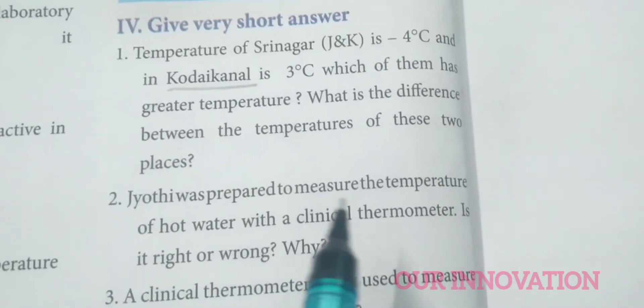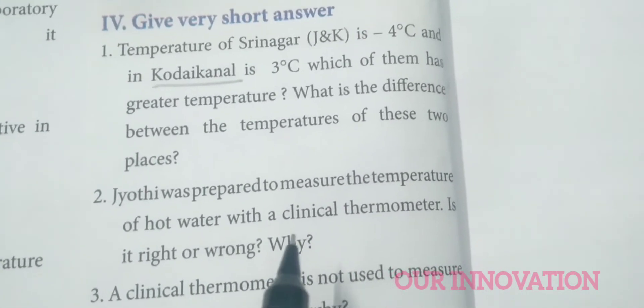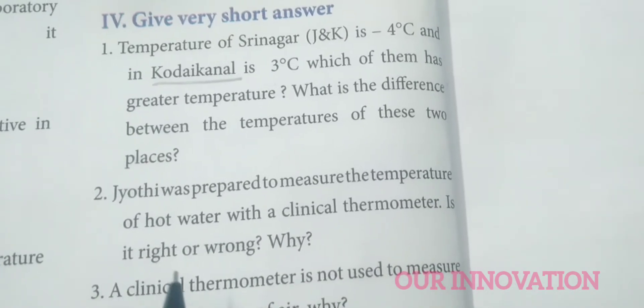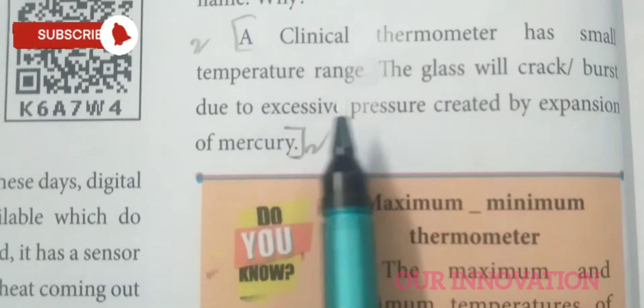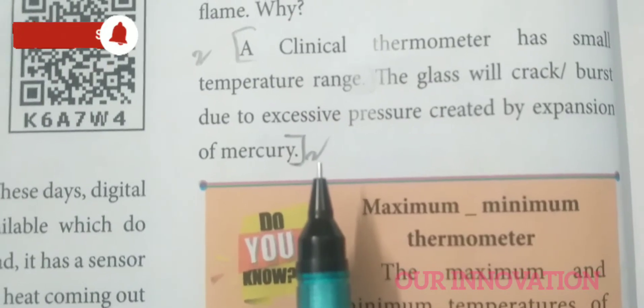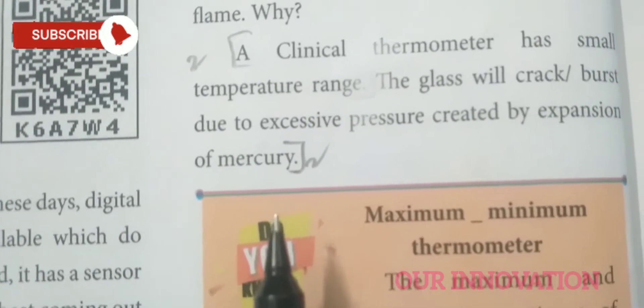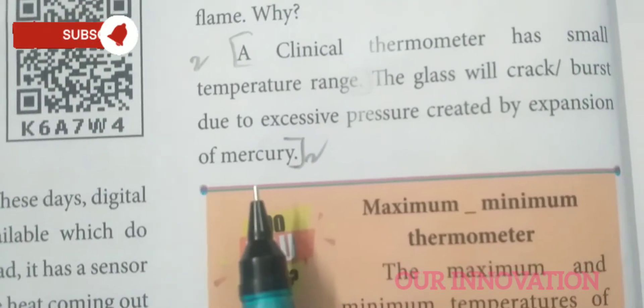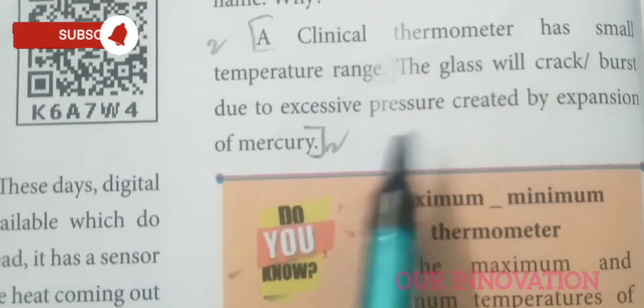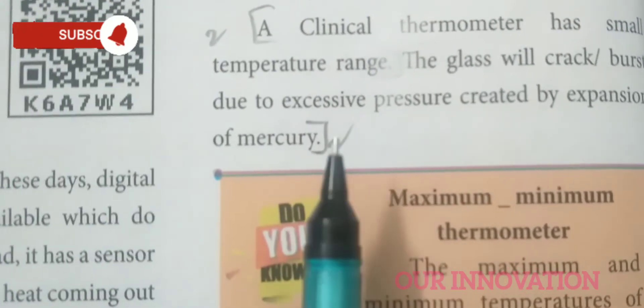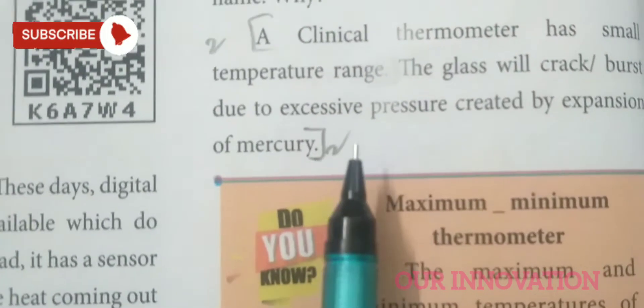Jodhi was prepared to measure the temperature of hot water with a clinical thermometer. Is it right or wrong? A clinical thermometer has a small temperature range. If used on hot water, the glass will crack or burst due to the excessive pressure created by the expansion of mercury. So what Jodhi is doing is wrong.